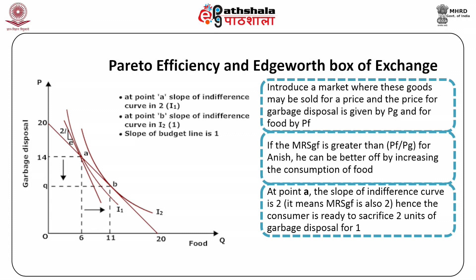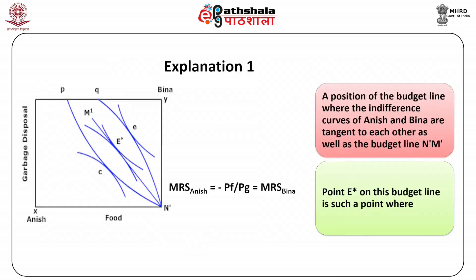From this we conclude that a consumer may be made better off by redistribution unless the marginal rate of substitution (slope of the indifference curve) and the relative price (slope of the budget line) are not the same. When the indifference curve is tangent to the budget line, we cannot make Anish or Bina better off — hence equilibrium is achieved.